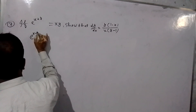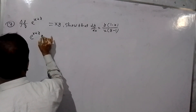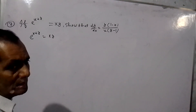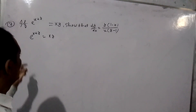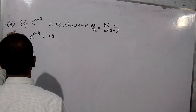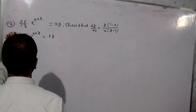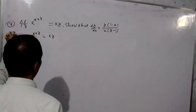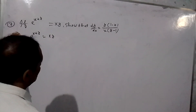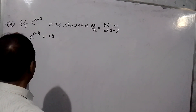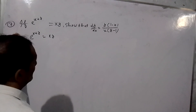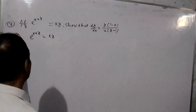We have e raised to the power x plus y is equal to x into y. We have to find the derivative using implicit differentiation — differentiate both sides, then separate dy/dx and isolate it.